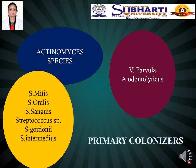The yellow complex consists of Streptococcus species: Streptococcus mitis, oralis, sanguis, gordonii and intermedius. This covers the primary colonizers. The blue complex consists of Actinomyces species and the violet complex consists of Veillonella species.